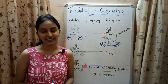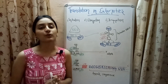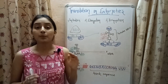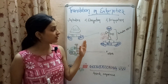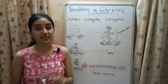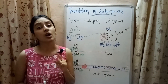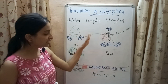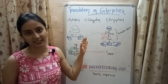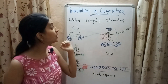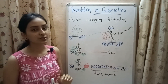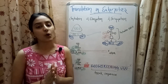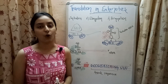Welcome to Biology at Ease. In this video I'll be explaining translation in eukaryotes. Before starting, I suggest you watch my previous video on translation in prokaryotes, as it will make this topic easier to understand. So let's start with eukaryotic translation. Translation refers to the synthesis of a polypeptide or a chain of amino acids from an mRNA with the help of ribosomes.